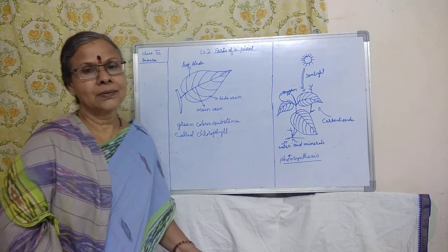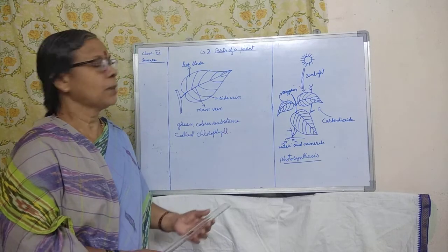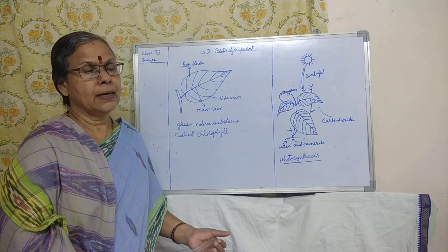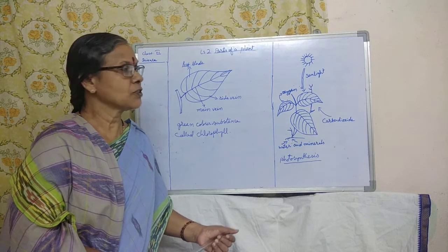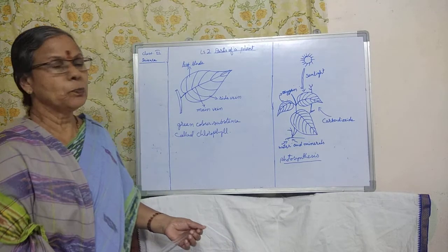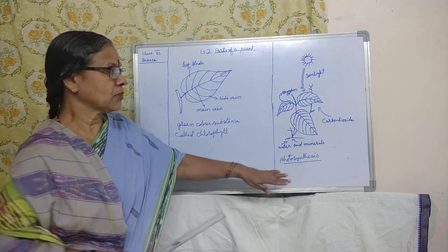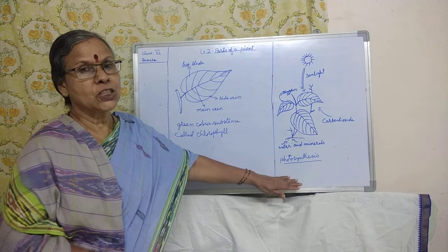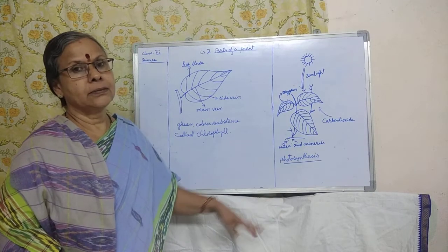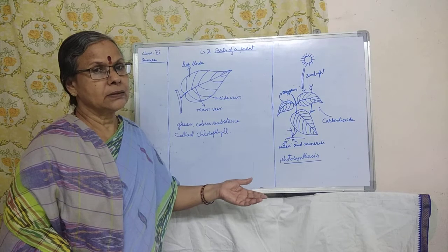Good morning children. Now lesson number two, parts of a plant. Let us continue. In the last class we have studied about the parts of a plant — the two main parts: the shoot and the root. We have seen the functions of the root and the stem.